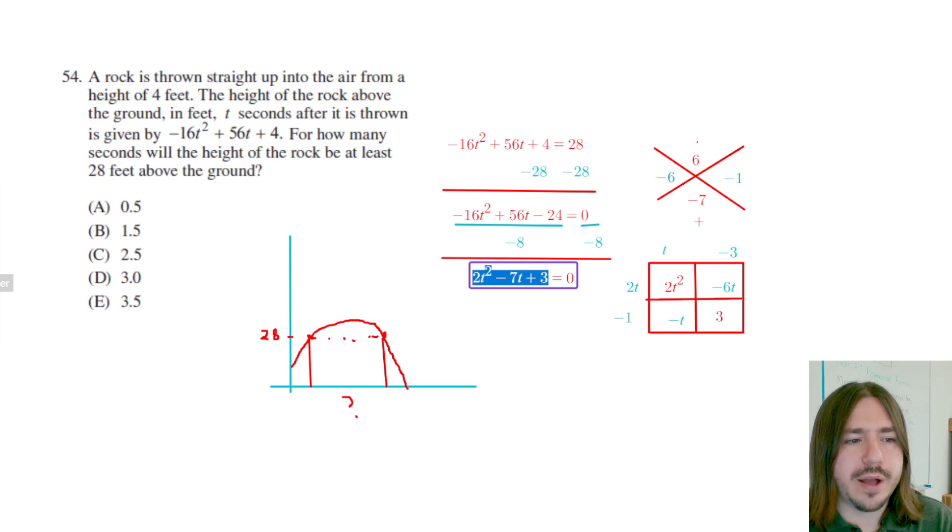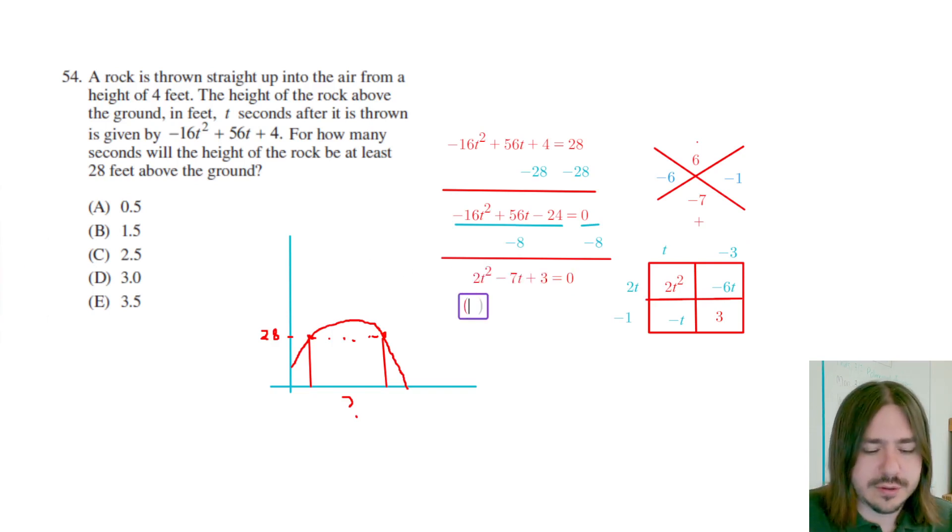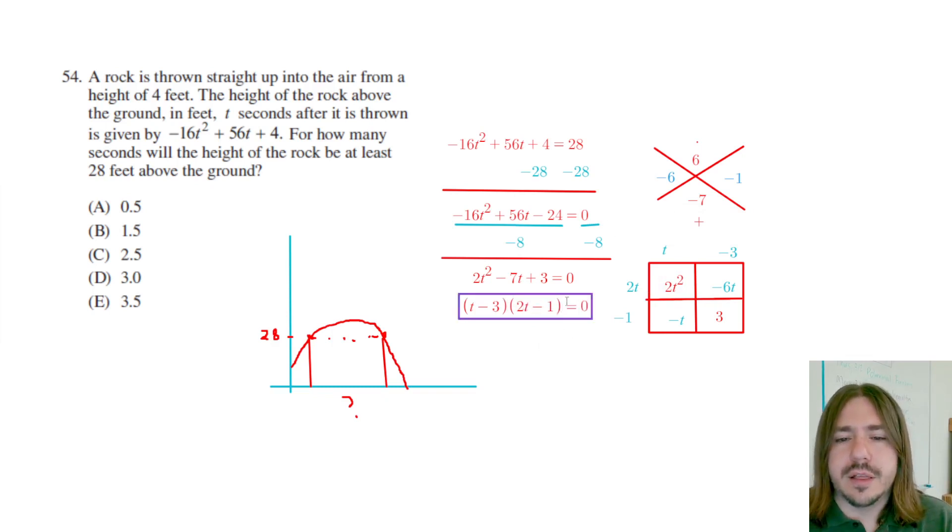And they're going to be these expressions along the top and down the side. So one of my factors is going to be t minus three. And the other one's going to be 2t minus one. Now that we've got this factored, we can set each factor equal to zero and solve them independently.